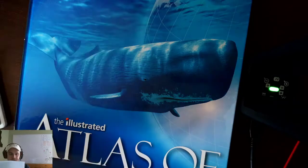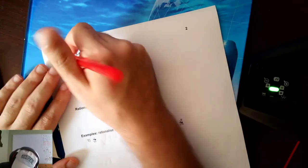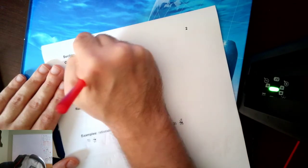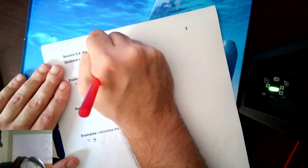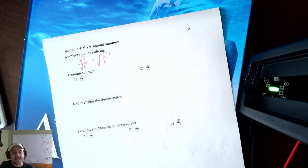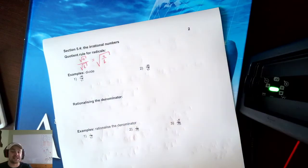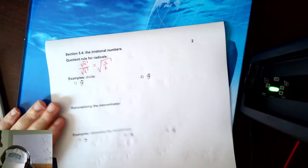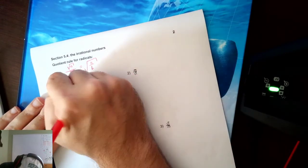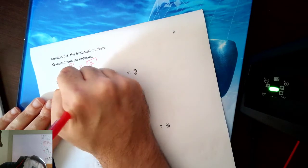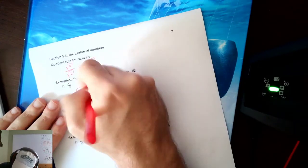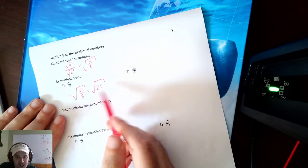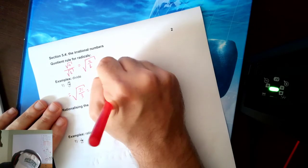The quotient rule for radicals: if I have square root of A over square root of B, that's the same as the square root of A over B. Radicals play nicely with division — you can bring the division inside the radical sign. Square root of 75 over square root of 3: according to the quotient rule, that's the square root of 75/3 = square root of 25, which is plain old 5.